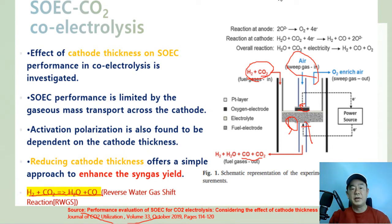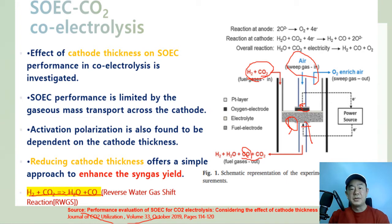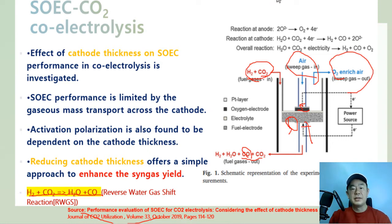Steam is again electrolyzed into hydrogen and oxygen. Finally, we obtain hydrogen and carbon monoxide from the cathode, and oxygen-rich air from the anode. In this experiment, as the thickness of the cathode electrode decreases, total loss is reduced.